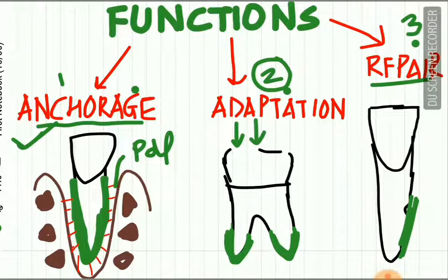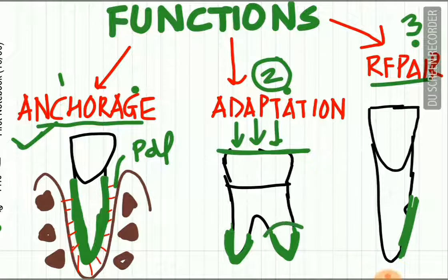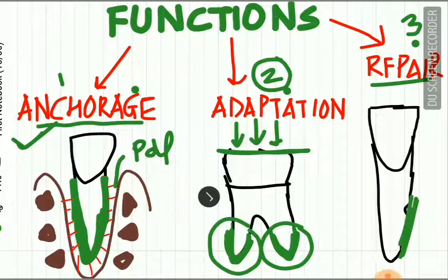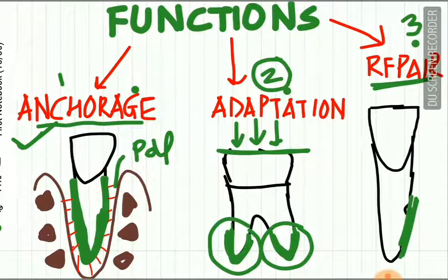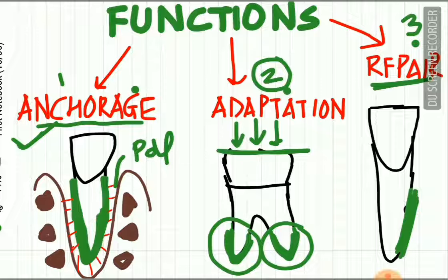If there are heavy occlusal forces causing wear of the occlusal surface, cementum is deposited on the apical area of the root as an adaptive response. The third function is repair: if there is an injury to the root in the form of pathological fracture or resorption, cellular cementum is deposited in the area of injury, demonstrating the repair function of cementum.